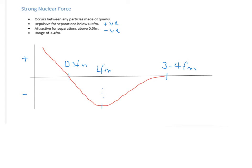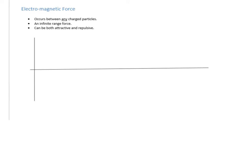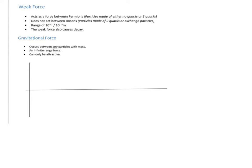That's the general shape of the strong nuclear force graph — something you need to know. Moving on to the electromagnetic force: it can be both attractive and repulsive, and it occurs between any charged particles, like protons and electrons. It's an infinite range force, so you'll see it both above and below the x-axis. Infinite range means it never stops — an electron on Earth exerts a force on an electron the other side of the universe.